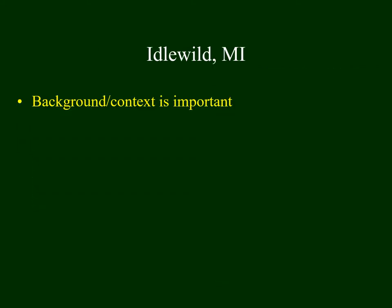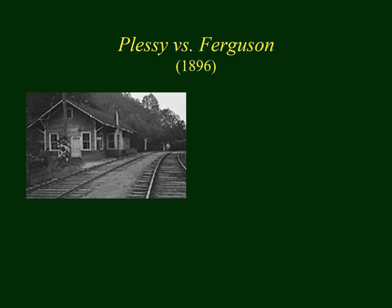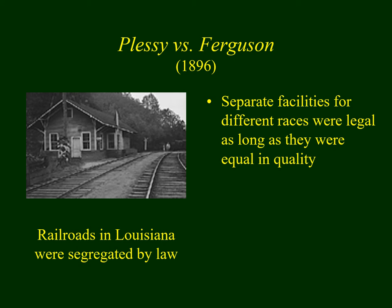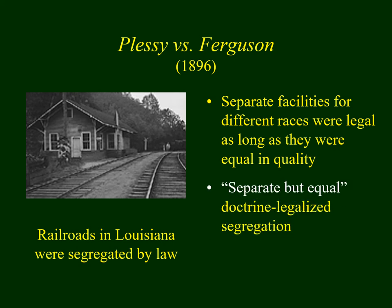It's important to understand some background and context to the history of Idlewild. I'd like to look at some history of race relations in the United States and the history of segregation. Segregation based on race was confirmed by a Supreme Court decision in the 1890s called Plessy v. Ferguson. This dealt with a law in Louisiana where all railroad cars were segregated. The Supreme Court declared that separate facilities for people of different races were legal, as long as they were equal in quality.